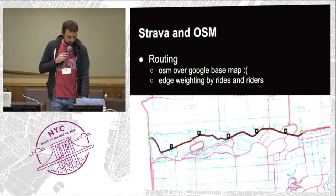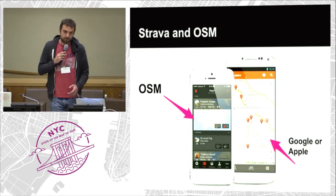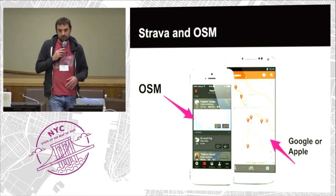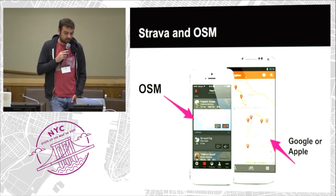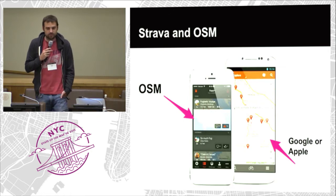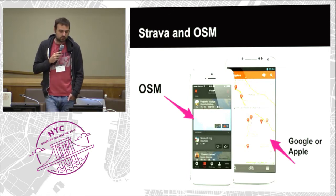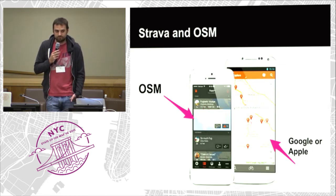OSM is our base layer for routing, and we also use it for tiles and maps. Any static map on Strava is OSM; anything slippy is Google or Apple. Given these two use cases, we have a strong interest in making OSM better, specifically for routing. Anything not in OSM we can't route over, which doesn't make people happy.